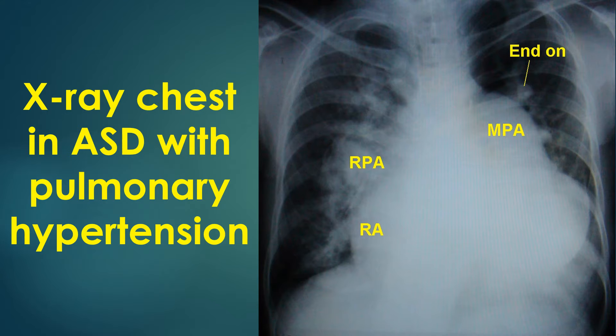The apex is upwards, suggesting a right ventricular configuration. All features suggest large secundum atrial septal defect with a large left-to-right shunt producing severe pulmonary hypertension.